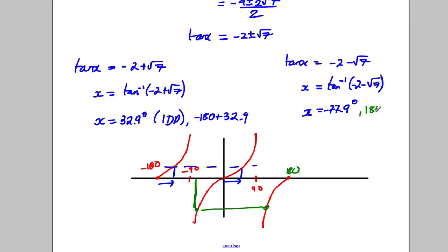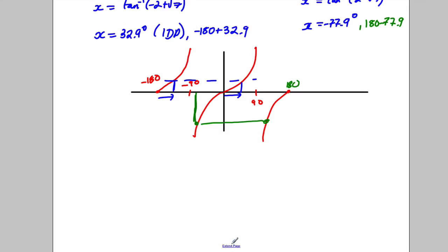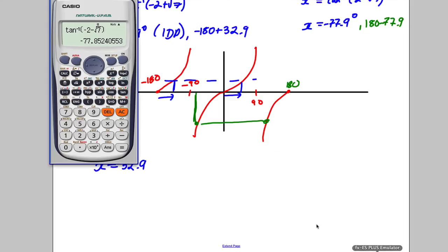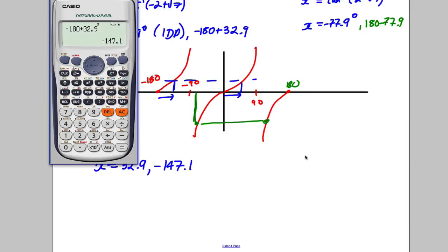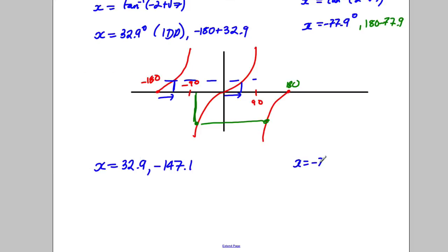So what are my potential answers? Well my answers, X could be 32.9, and then I've got myself negative 180 plus the 32.9 which would be negative 147.1. And what would I get over here? Well I've got this negative 77.9, I'd also have 180 subtract 77.9 which would give me 102.1. So I'd get X is negative 77.9 and 102.1.